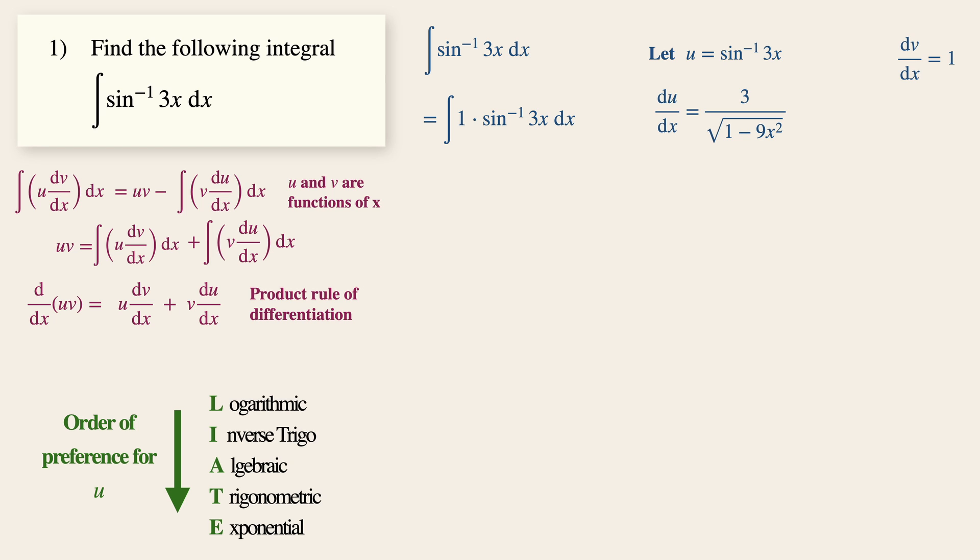Evaluating both sides, du over dx is 3 over root 1 minus 9x squared, while v is simply x. Now combining them using this expression, u multiplies with v minus v multiplies with du over dx, we will then have this expression over here.